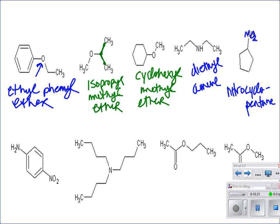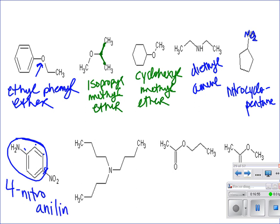This one required memorization. From the perspective of the amine group: aniline is a benzene ring with an NH₂ group — aniline must be carbon one. The nitro group is at position four, so this is 4-nitroaniline. The next compound has four chains of the same type — tributylamine.